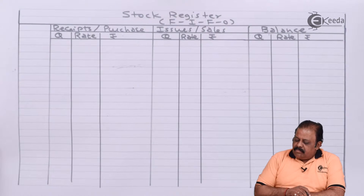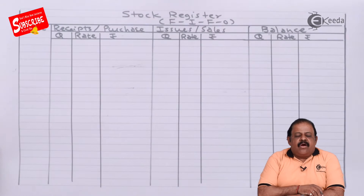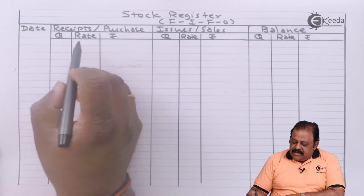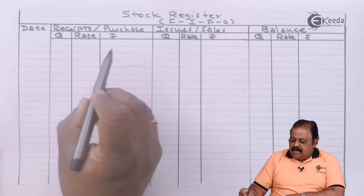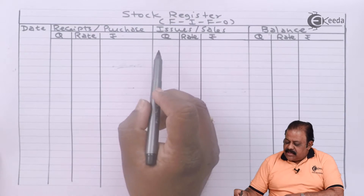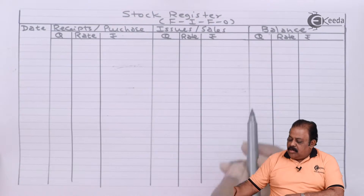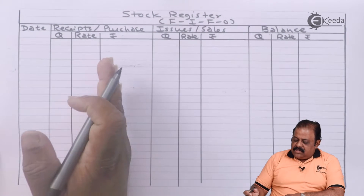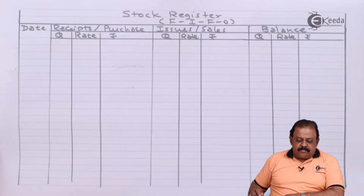We have drawn a stock register with the following columns. The first column is the date column. The second column records receipts and purchases, with sub-columns for quantity (units), rate, and value (rupees). The third column records issues, and the last column records the balance, with sub-columns for quantity, rate, and rupees. Receipts go in the first column, issues in the second, and daily balance units in the last column.